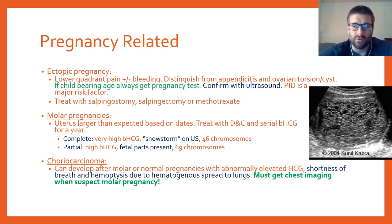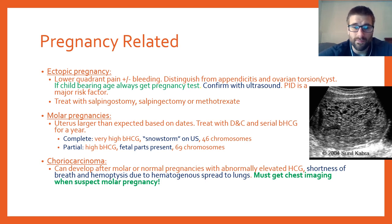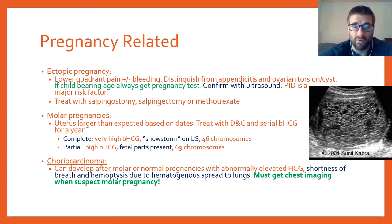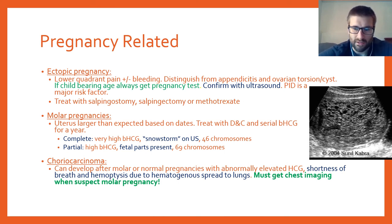Choriocarcinoma can develop after any type of pregnancy — normal, molar, or ectopic — wherever there was elevated HCG. Patients typically present with shortness of breath and hemoptysis, because choriocarcinoma spreads hematogenously to the lungs. Chest imaging is required to assess for pulmonary metastases.